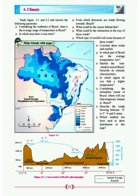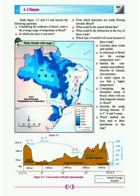The first question is: considering the isotherms of Brazil, what is the average range of temperature in Brazil? If you see the diagram clearly, in the south the temperature is 28 degrees Celsius, and in the north you will also see values. The lowest is 18 and the highest is 28 as per the map. To find the average, you add 18 plus 28 divided by 2.